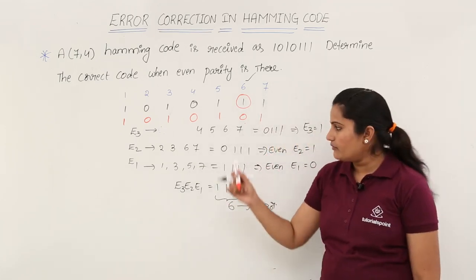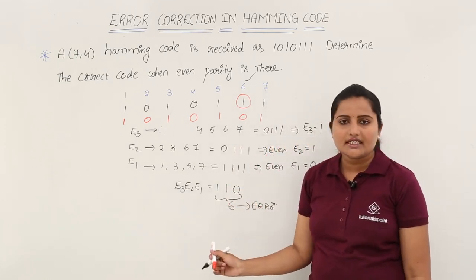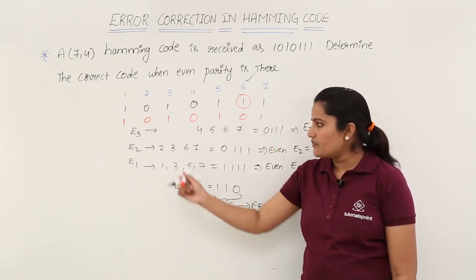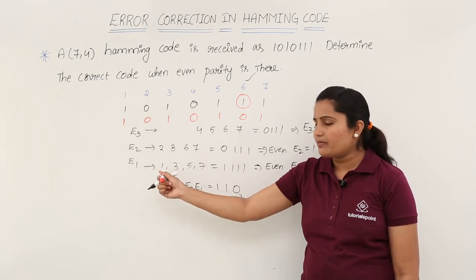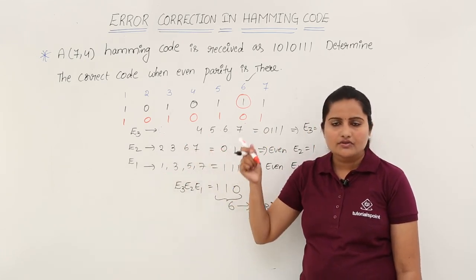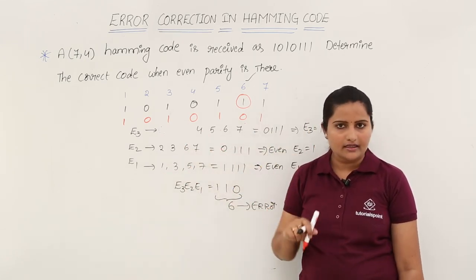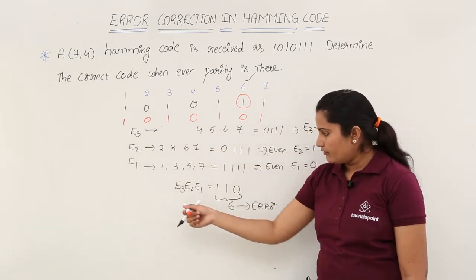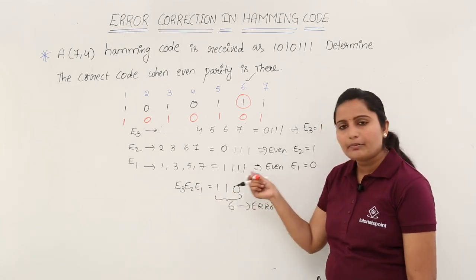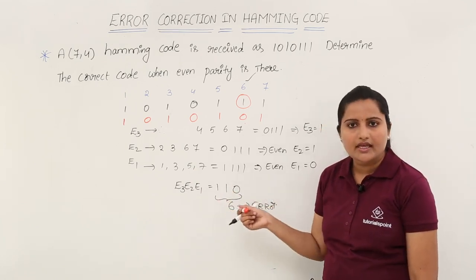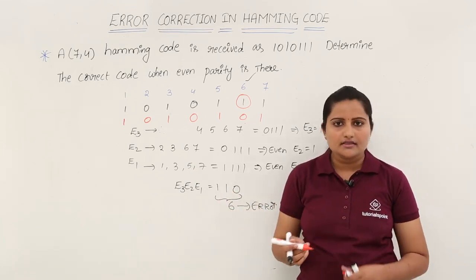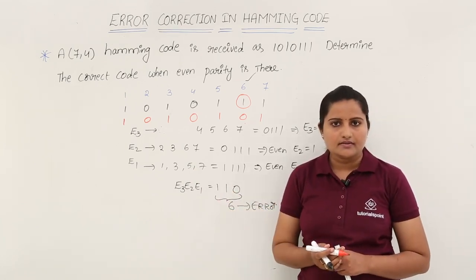At reception, we detect and correct errors by taking error places with the same reference positions used for parity bits, forming the error bit combination to find the position of the error, and then correcting it.